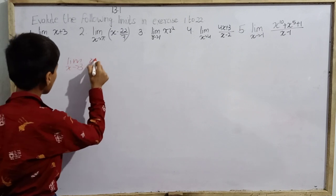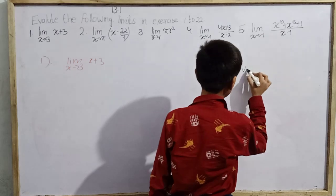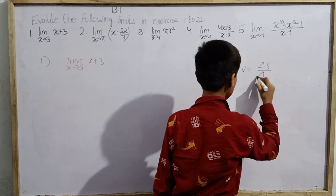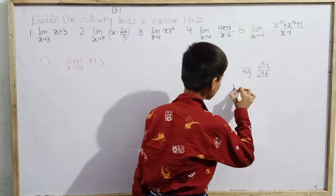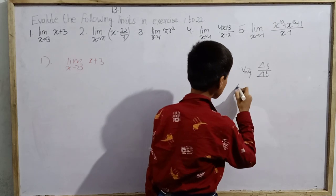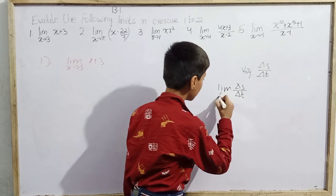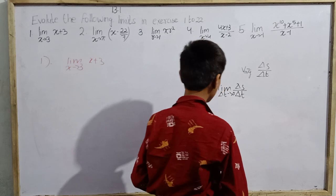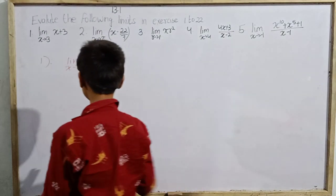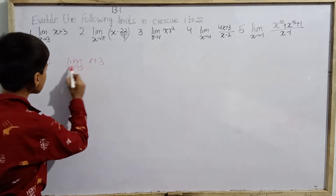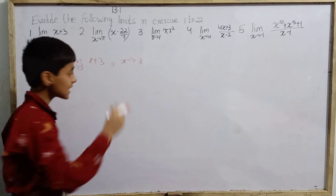Because in physics we have to form equations. Suppose we write average velocity as ds/dt — actually delta s by delta t — and we write the limit where delta t tends to 0. As it becomes approximately 0, this gives us ds/dt, the instantaneous velocity. Differentiation is also very useful. So I put x's value — which is the variable — as x tends to 3, meaning x's value is 3.